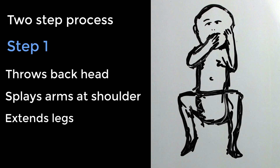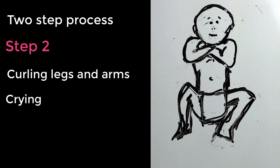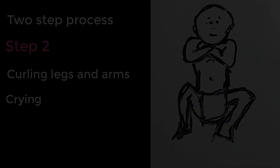The infant throws back its head, splays its arms at the shoulder and extends its legs. This is followed by the baby curling its legs and arms back to its body, followed occasionally by the baby letting out a cry.